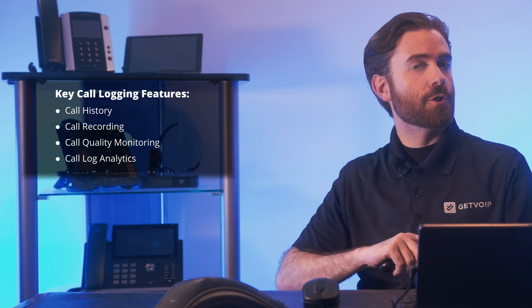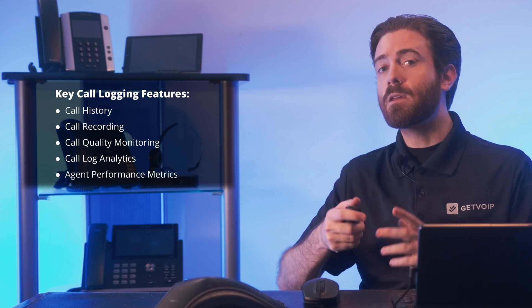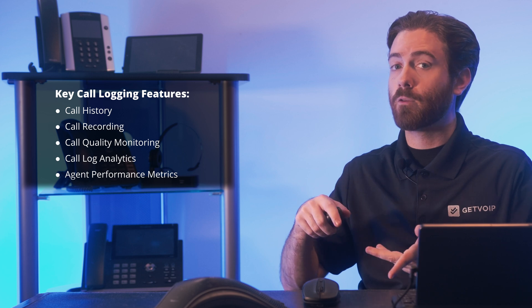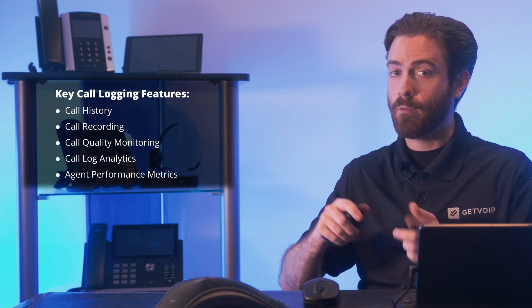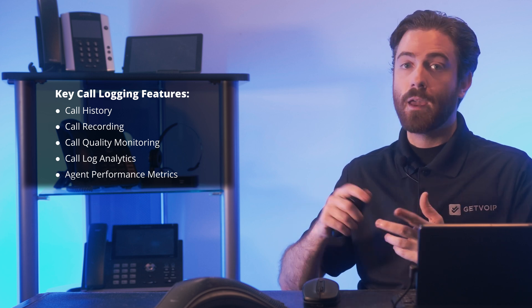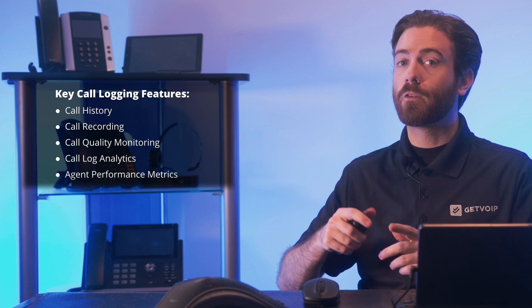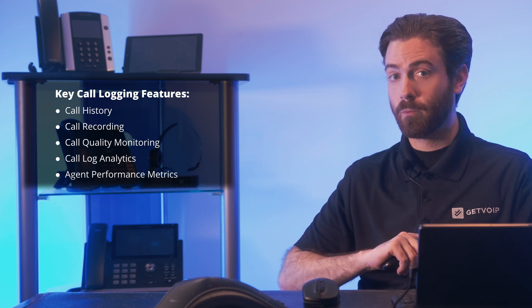Next, agent performance metrics. These are individual agent performance KPIs like speed to answer, talk and hold times, average handle time, and after call work time. This can also be configured for ring groups.